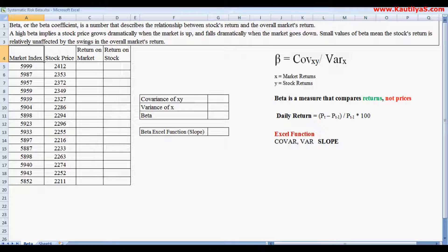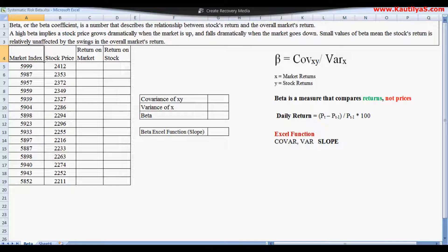A high beta implies the stock price grows dramatically when the market is up and falls dramatically when the market goes down. Small values of beta mean the stock's return is relatively unaffected by the shrinks in the overall market.